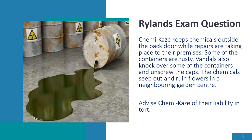The exam scenario we're going to be looking at today on Rylands and Fletcher: Chemikas keeps chemicals outside the back door while repairs are taking place to their premises. Some of the containers are rusty. Vandals also knock over some of the containers and unscrew the caps. The chemicals seep out and ruin flowers in a neighbouring garden centre. You're being asked to advise Chemikas of their liability in tort.